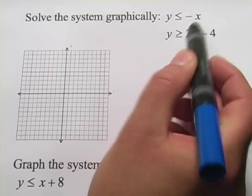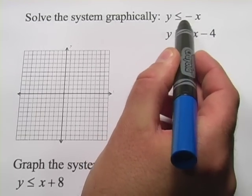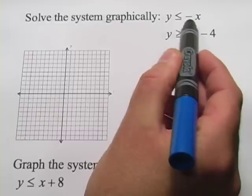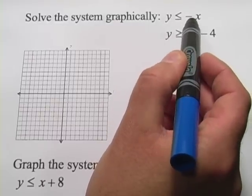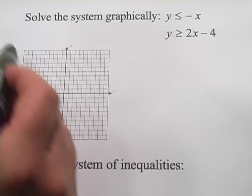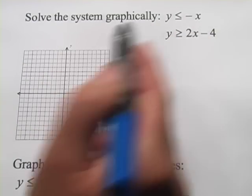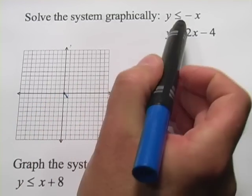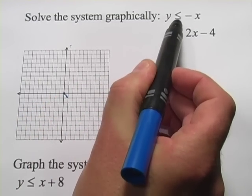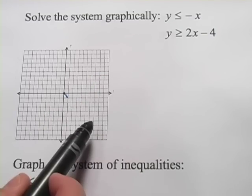Let's start by graphing this first inequality. We have y is less than or equal to negative x. So the first thing I want to do is kind of sketch in the line y equals negative x. That line has a slope of negative 1, so it's going to slope downward, and it has a y-intercept of 0. Now, before I sketch it in, I want to ask, is this less than or is it less than or equal to?